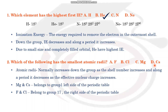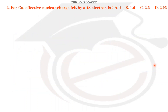Left to right, the size decreases. Comparing fluorine and chlorine: fluorine has a smaller atomic radius than chlorine because it has fewer shells. Therefore, fluorine has the smallest atomic radius.